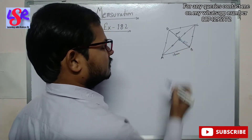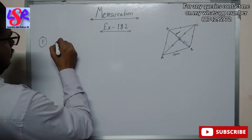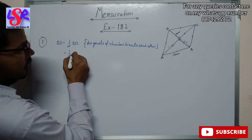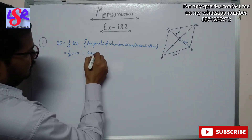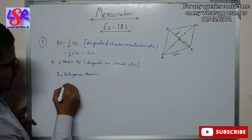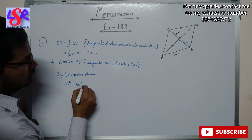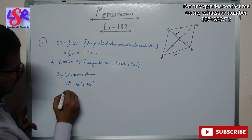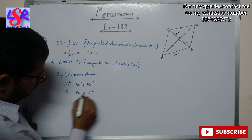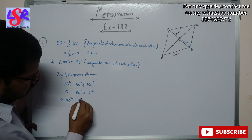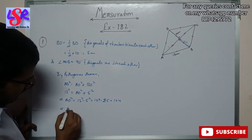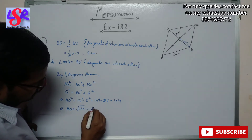We have a 90-degree angle at the intersection, so we can apply the Pythagorean theorem. BO equals half of BD, which is half of 10 = 5 cm. Angle AOB equals 90 degrees as diagonals are perpendicular. By Pythagoras theorem: AB² = AO² + BO². So 13² = AO² + 5², which gives AO² = 169 − 25 = 144, therefore AO = √144 = 12 centimeters.